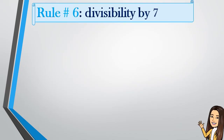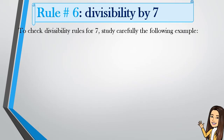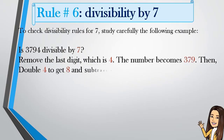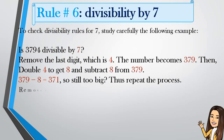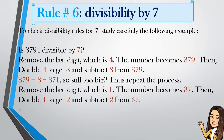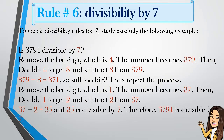Rule number 6: Divisibility by 7. To check divisibility by 7, study carefully the following example. Is 3794 divisible by 7? Here's the rule: First, remove the last digit, which is 4. The number becomes 379. Then double 4 to get 8 (4 times 2 equals 8). Then subtract 8 from 379: 379 minus 8 equals 371.